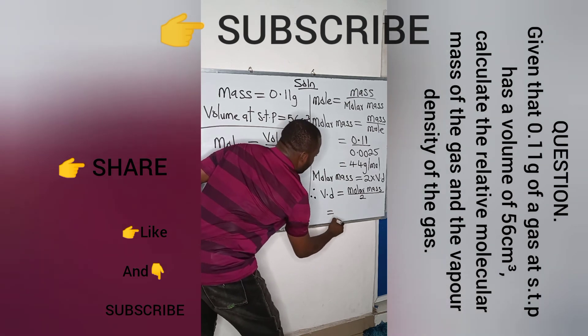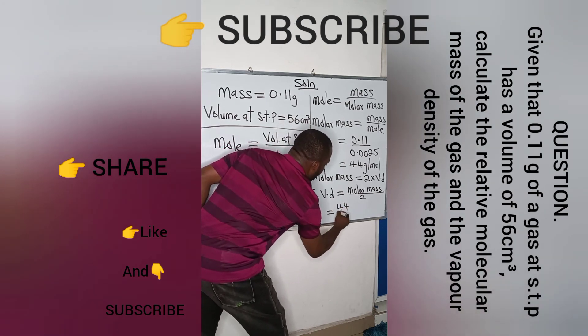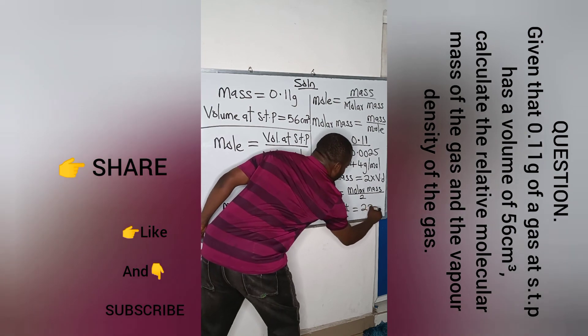So, our vapor density becomes 44 all over 2 and that will give us 22.